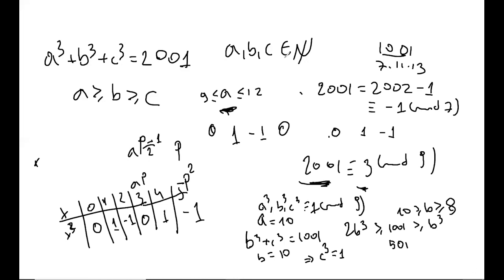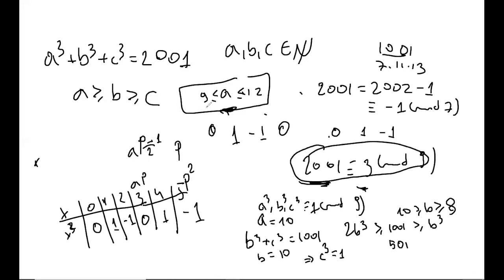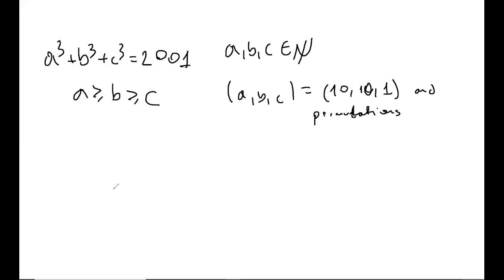Now here's how you would write this down. First, notice that modulo 9, 2001 ≡ 3. Then note that x³ for any integer x is 0, 1, or −1 mod 9. Because we have three such cubes summing to 3 mod 9, each of a³, b³, and c³ must be ≡ 1 mod 9. Combining that with the estimate 9 ≤ a ≤ 12 gives a = 10, which then determines b = 10 and c = 1. And as always, thanks for problem solving!